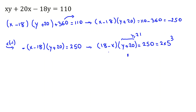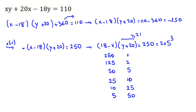Starting from the smaller divisor pairs: if one factor is 1, the other is 250; if 2, then 125; if 5, then 50; if 10, then 25. Since y plus 20 must be at least 21, we cancel the cases where y plus 20 is 1, 2, 5, or 10. The valid cases for y plus 20 are 25, 50, 125, and 250.